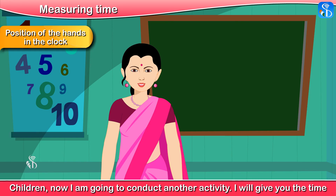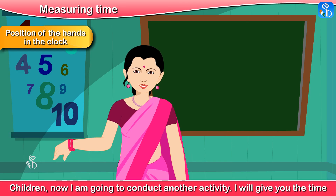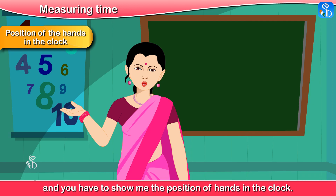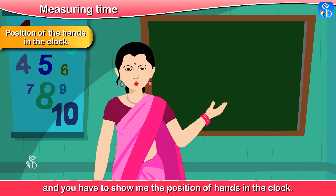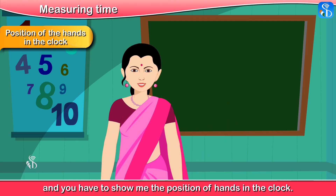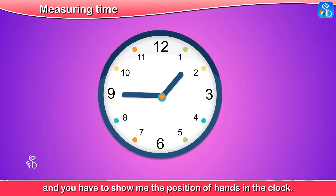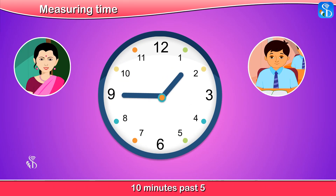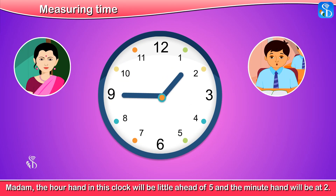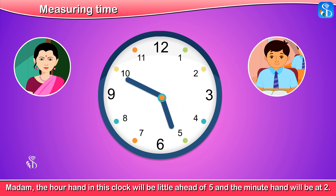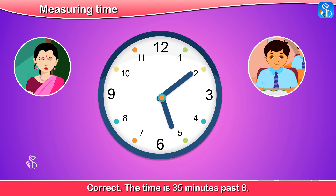Position of the hands in the clock. Children, now I am going to conduct another activity. I will give you the time and you have to show me the position of the hands in the clock. 10 minutes past 5. Madam, the hour hand in this clock will be a little ahead of 5 and the minute hand will be at 2. Correct.